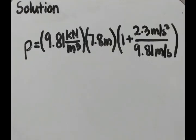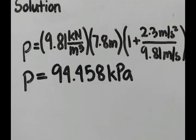So we have p equals 9.81 kilonewtons per cubic meter multiplied by the height of water, which is 7.8 meters, times 1 plus 2.3 meters per second squared divided by the gravity, which is 9.81 meters per second squared. We solve it directly and cancel units, which gives us an answer of 99.458 kilopascals.